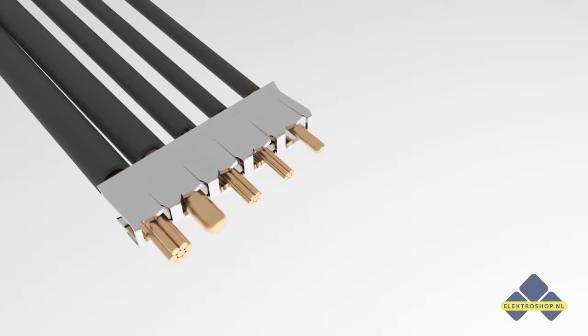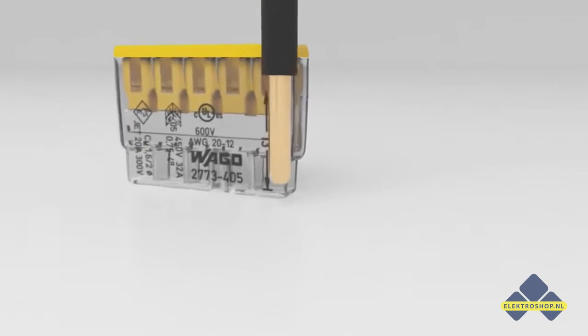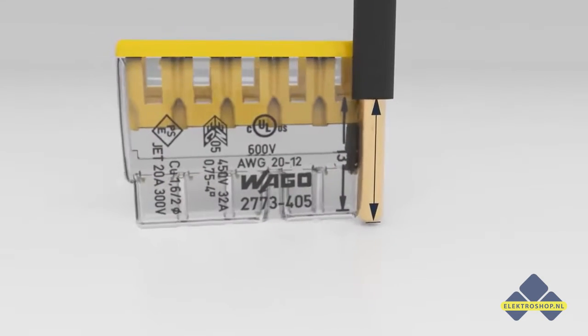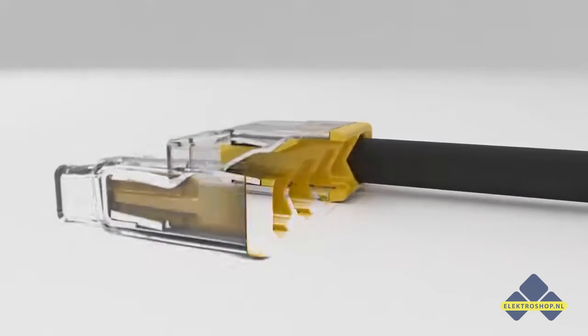Every conductor is also clamped by a separate spring. Simply strip the conductor according to the strip length guide printed on the side of the connector housing. Insert the stripped connector until it hits the backstop.